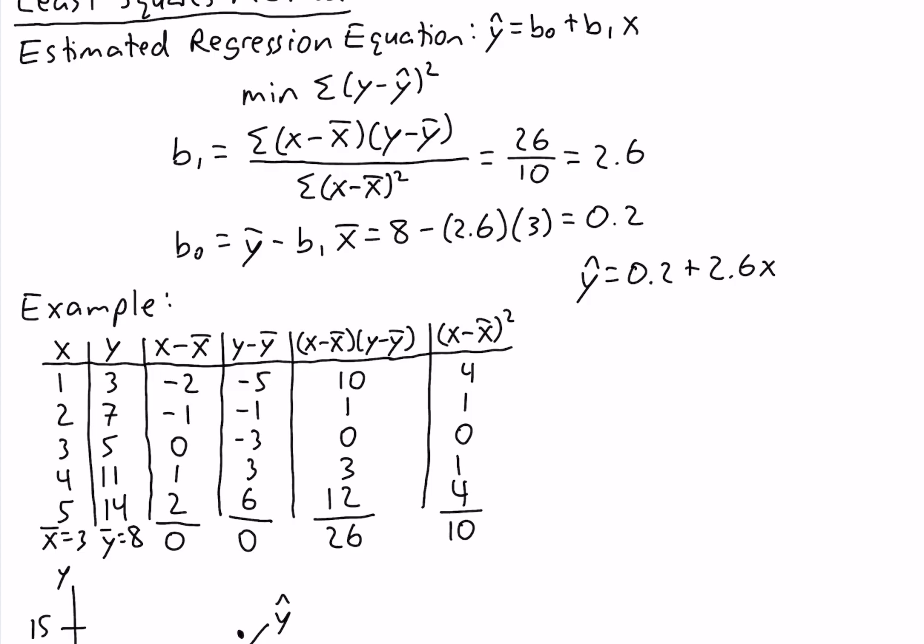The interpretation of b1, the slope, is the same as interpreting any slope: it's how much y changes when we increase x by 1 unit. But since we have y-hat here, we interpret it as the predicted change in y. So when x increases by 1 unit, y is predicted to increase by 2.6. The intercept b0 is the value of y-hat when x equals 0, so y is predicted to be 0.2 when x equals 0.